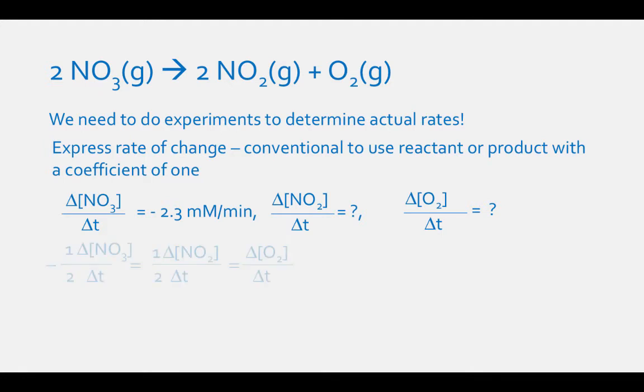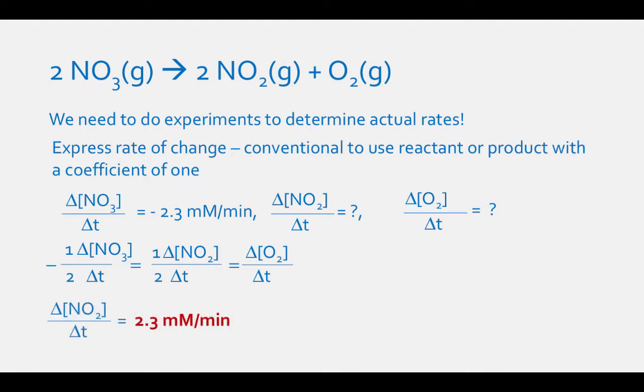We know that negative one-half the change in concentration of NO3 per delta time equals one-half the change in concentration of NO2 per delta time, which equals the change in concentration of O2 per delta time. Since the delta concentration of NO3 per delta time is negative 2.3 millimolar per minute, we just have to switch the sign to get our rate of change in the concentration of NO2. The delta concentration of NO2 per delta time equals 2.3 millimolar per minute. To find the rate of change of O2, O2 increases at half the rate of NO2, so the rate of change of O2 equals one-half times 2.3 millimolar per minute, which equals 1.2 millimolar per minute.